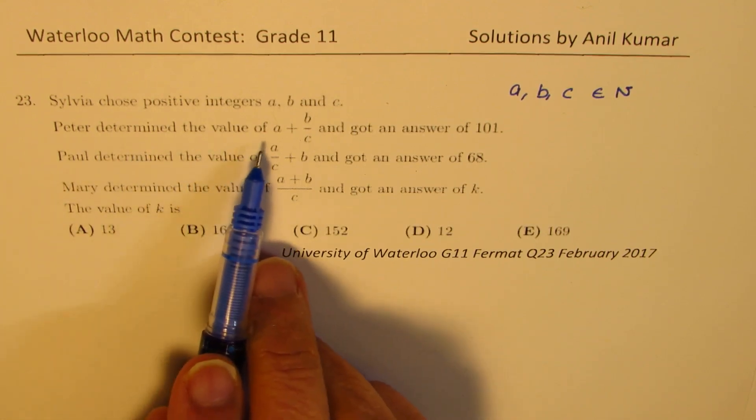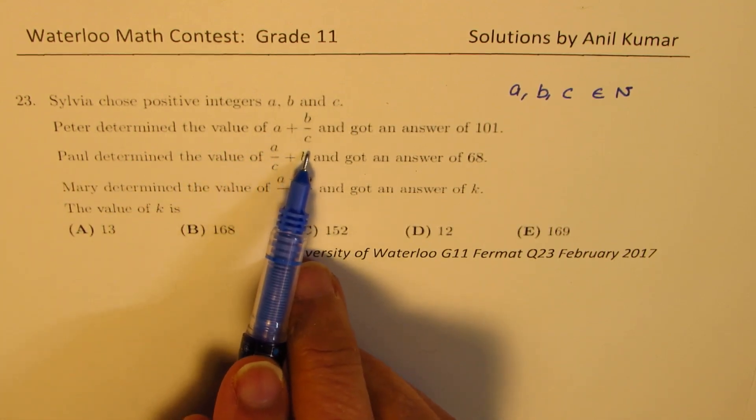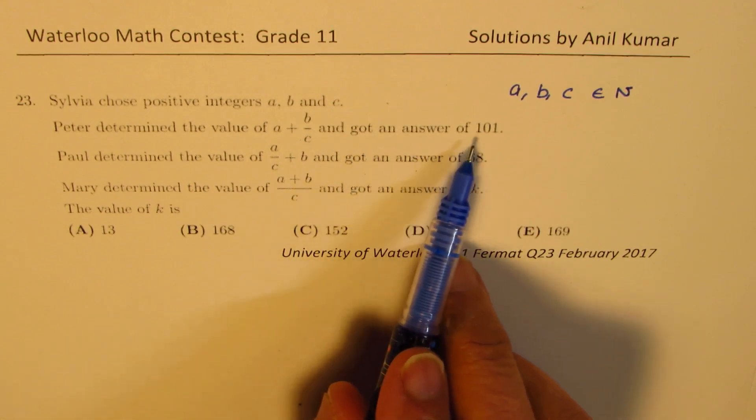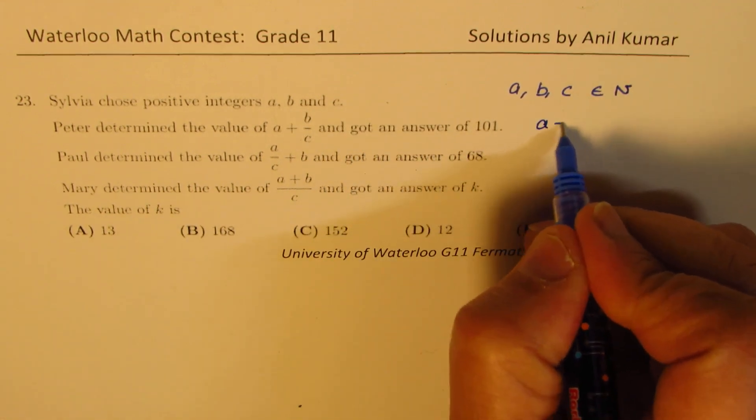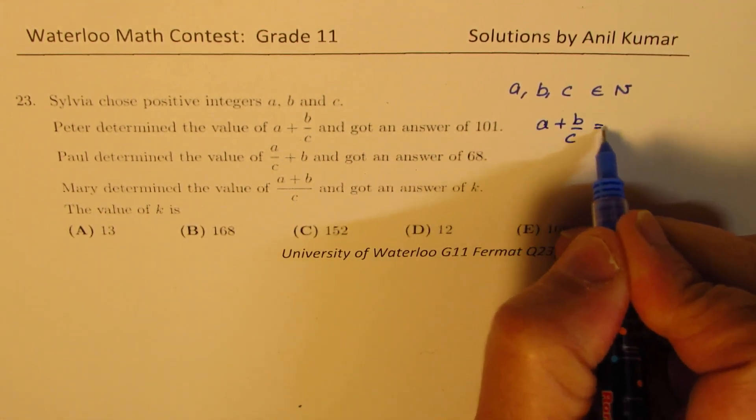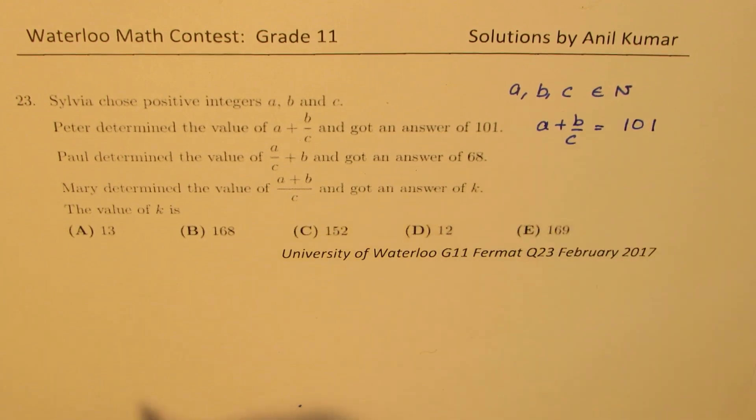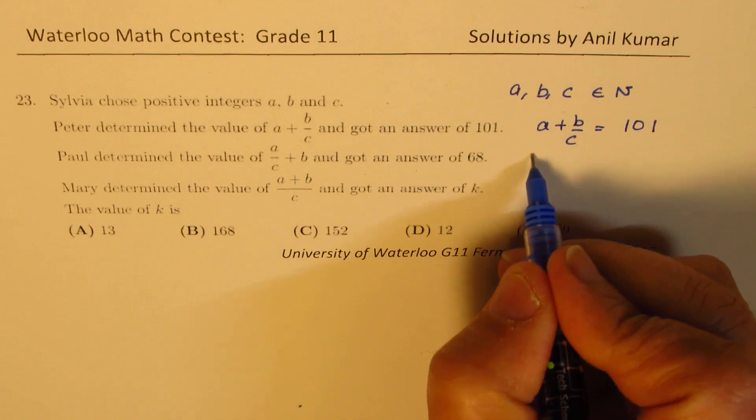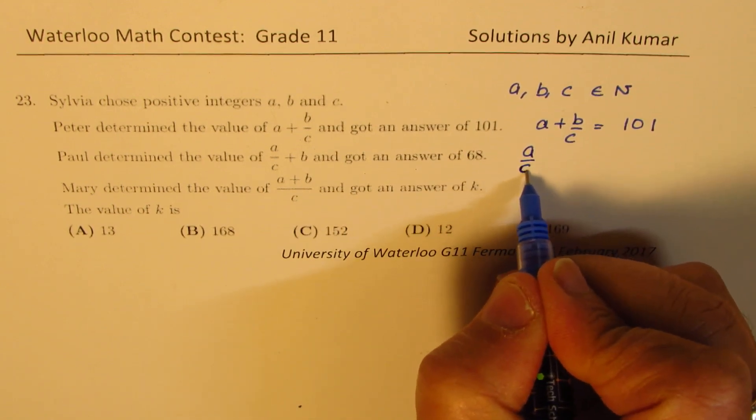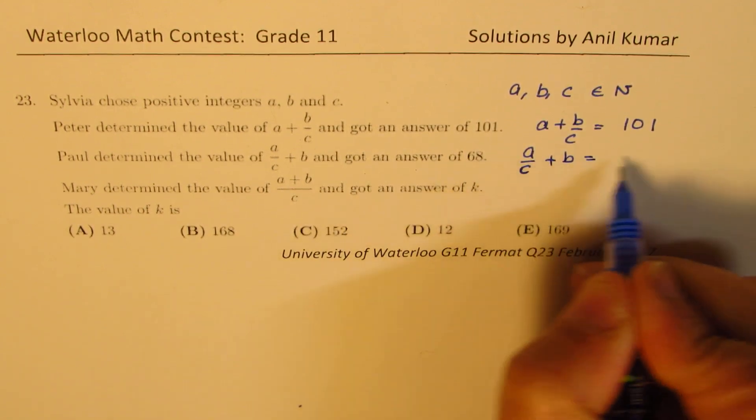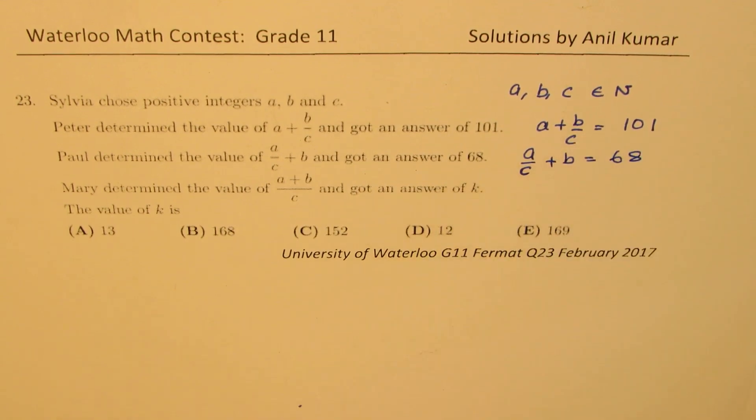Peter determined that the value of A plus B over C and got an answer of 101. So A plus B over C is given to you as equal to 101. Paul determined A over C plus B is 68. That is what they figured out.